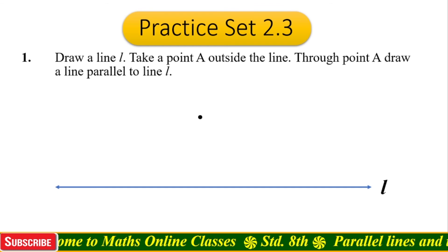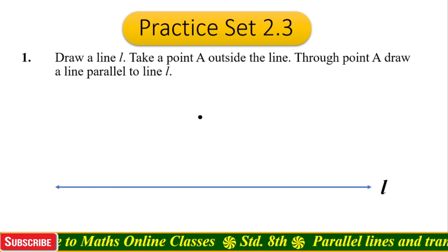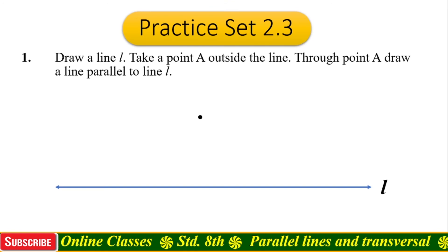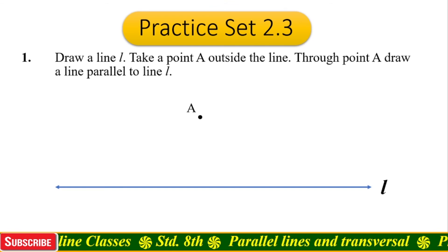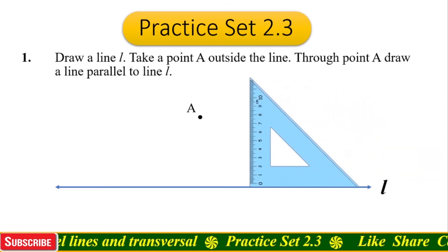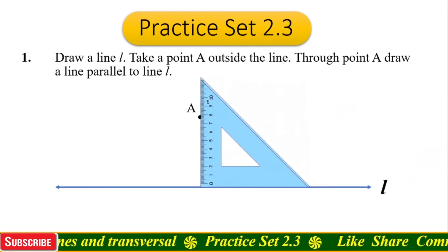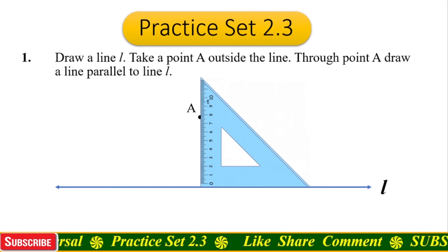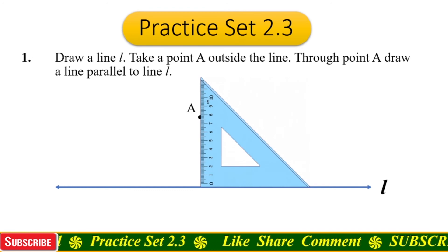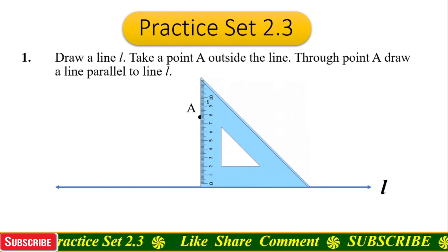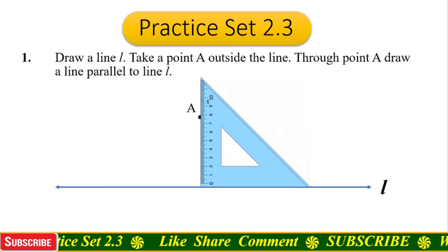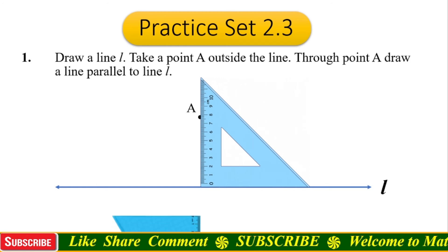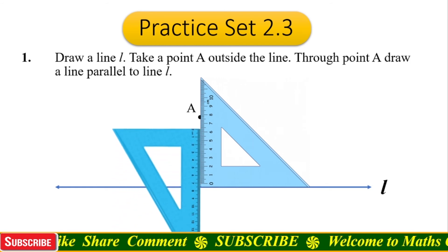Now take a point outside the line and name it as point A. Take a set square and settle it on line l in such a way that its vertical side should coincide with point A. Now take another set square upside down.